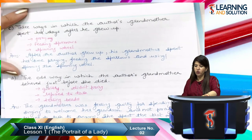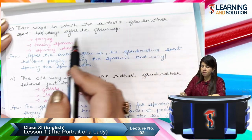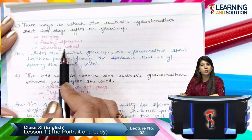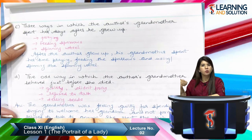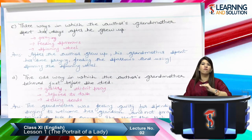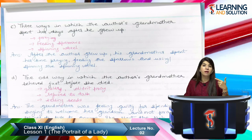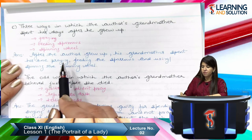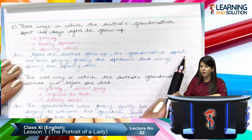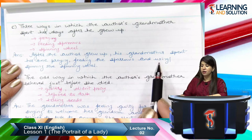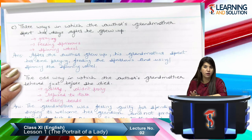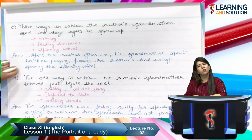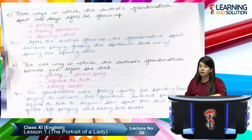The next question: mention three ways in which the author's grandmother spent her days after he grew up. How did she spend her days in the city? She used to pray, she used to feed the sparrows, and she used to sit at the spinning wheel the whole day. If we convert these three points into sentence form, we get our answer: after the author grew up, his grandmother spent her time praying, feeding the sparrows, and using the spinning wheel.